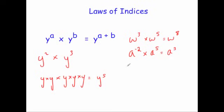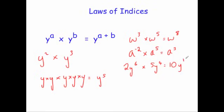Sometimes you have numbers in front of the letters. For example, 2y to the power of 6 times 5y to the power of 4. First multiply the numbers at the front: 2 times 5 is 10. Then add the powers for y: 6 plus 4 is also 10. So the answer is 10y to the power of 10.